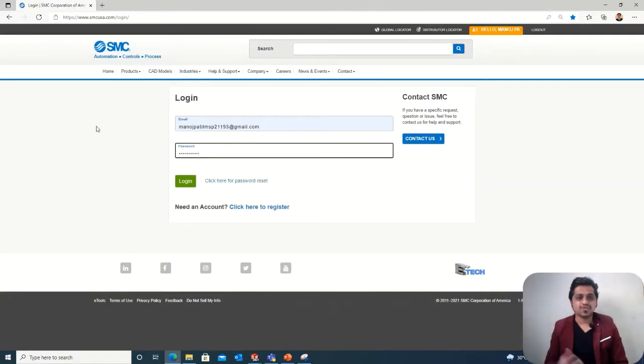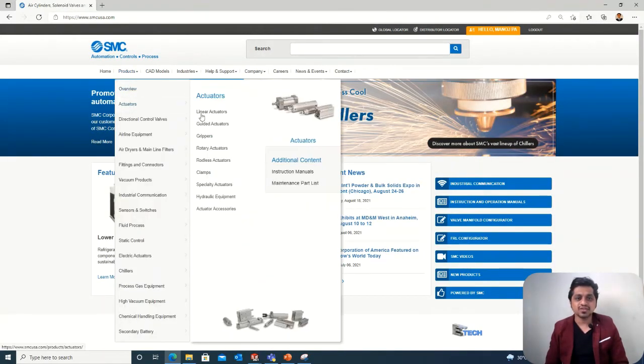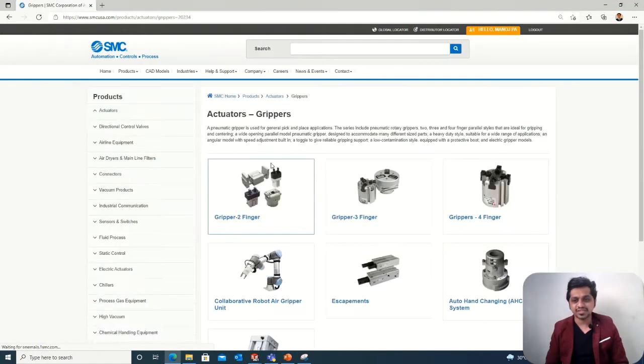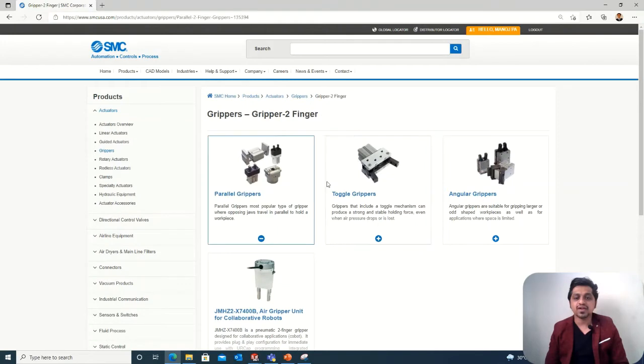You have to log into the SMC site by putting your credentials. Once you log into the site, you can see the products. Go into the actuators and the gripper section where you can find different kinds of grippers.